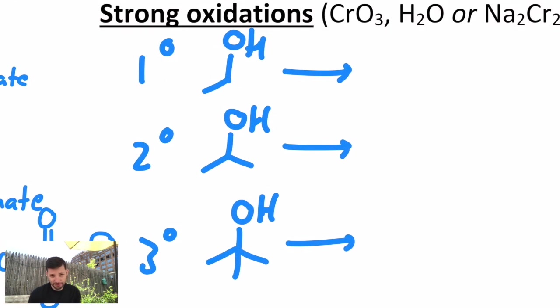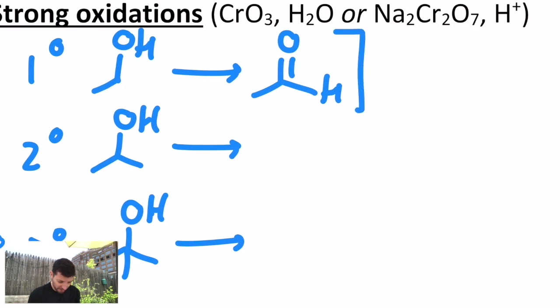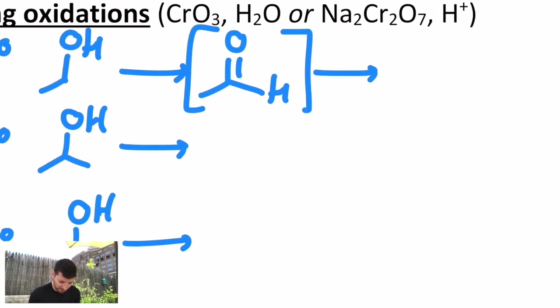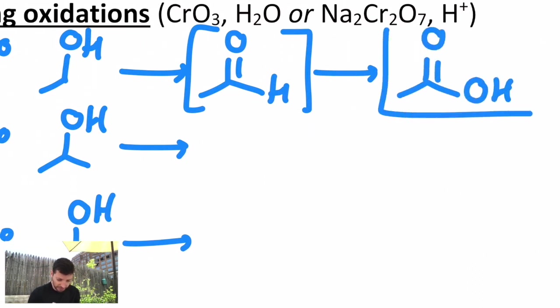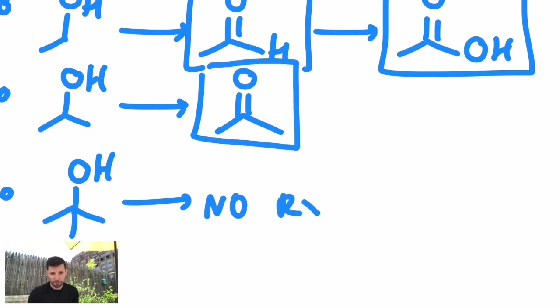And the only one that's different is the primary. Everything else is the same. And in fact, at first, it looks like it does the same thing. Primary alcohols, under these strong oxidizing conditions, including the Jones oxidation that we saw a moment ago, first makes an aldehyde, but it doesn't stop there. It undergoes a subsequent oxidation, and you actually get a carboxylic acid.